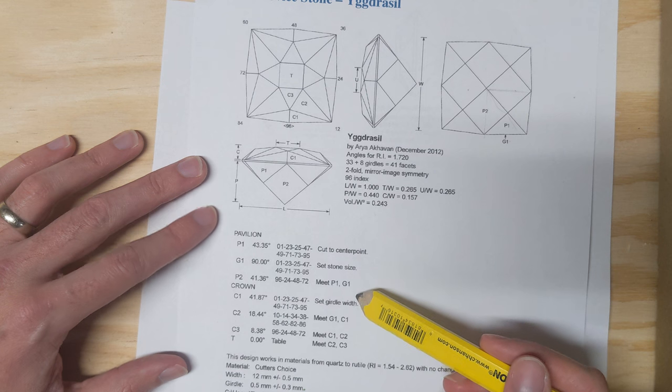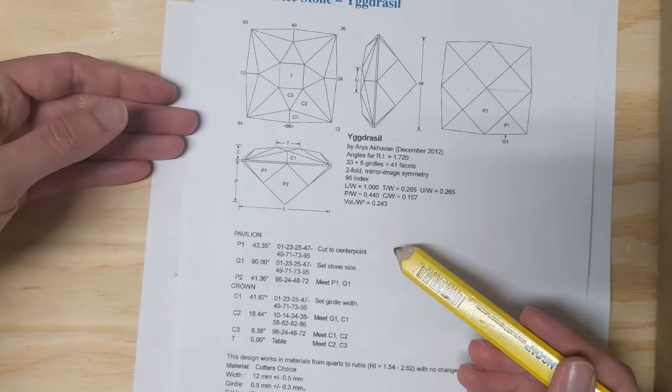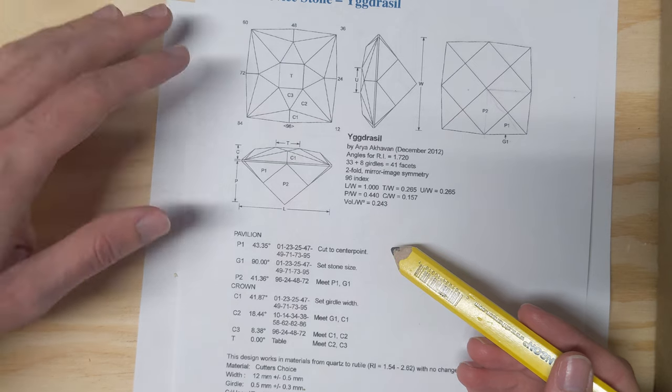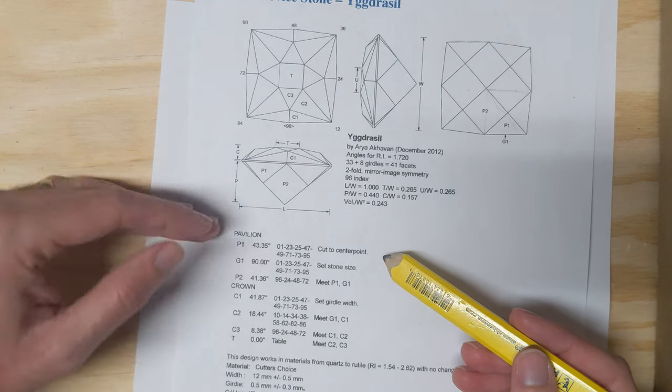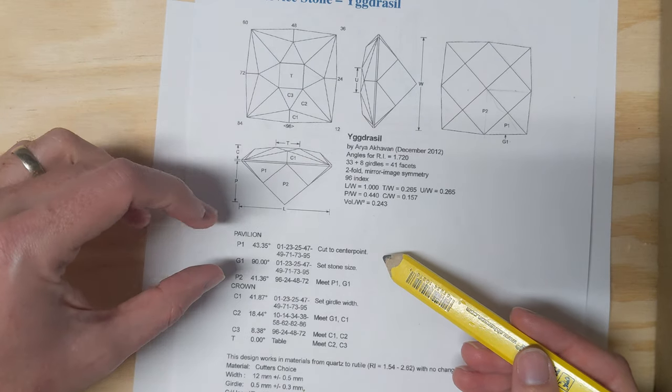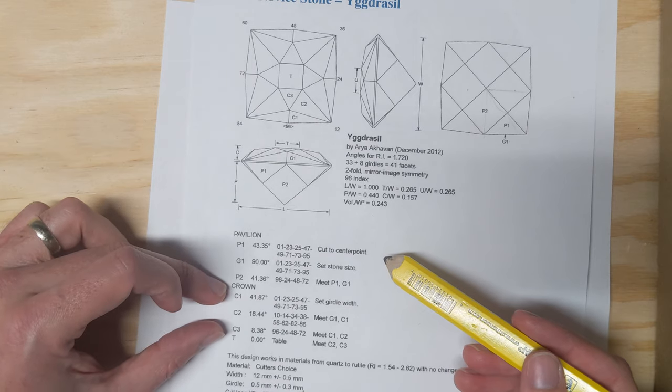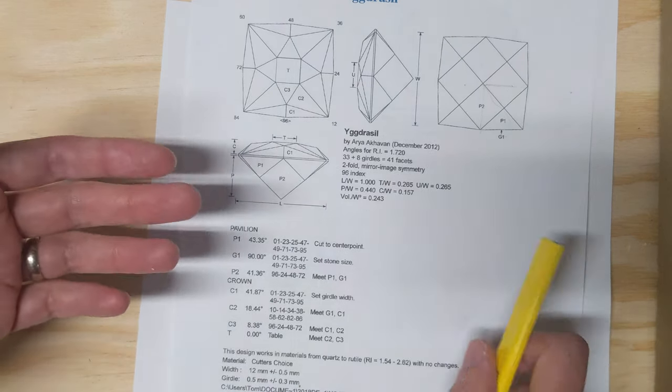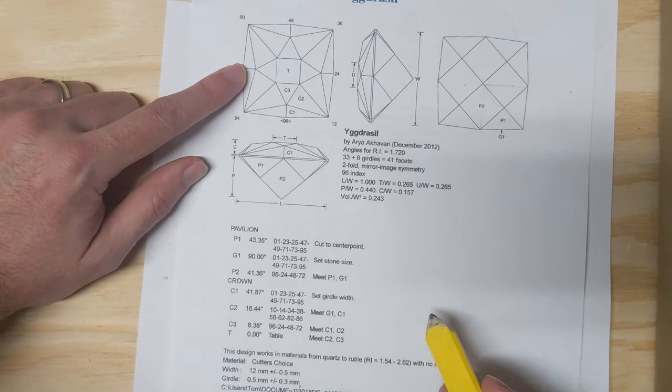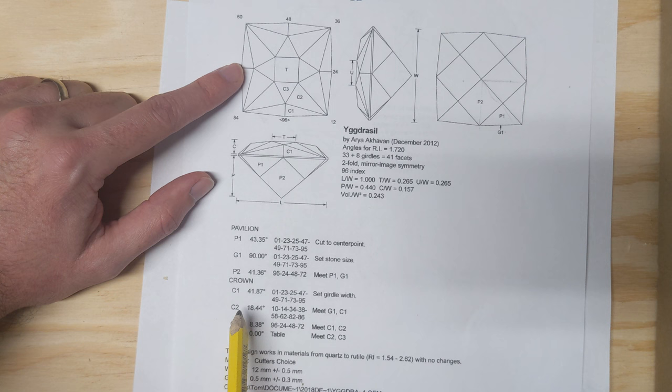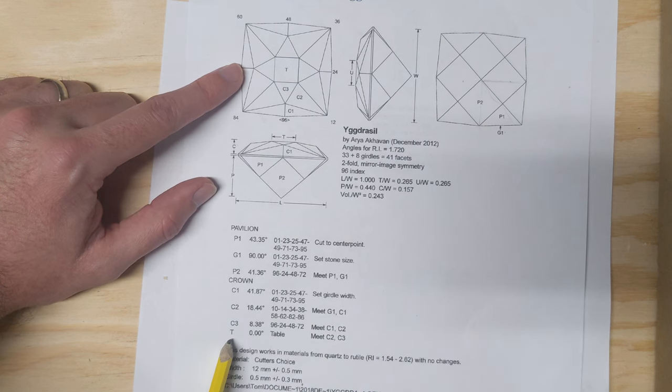Once you've cut everything in on the pavilion, you run through it on different grits from whatever your roughest grit is, 180 or 360, whatever you're cutting it in on. You go to a final polish on the pavilion, so it's completely finished before you switch over to the crown, because then you have to transfer the stone to a different dop and then cut the top side of the stone or the crown. You basically follow the same pattern, crown one, crown two, crown three, and then T is table.